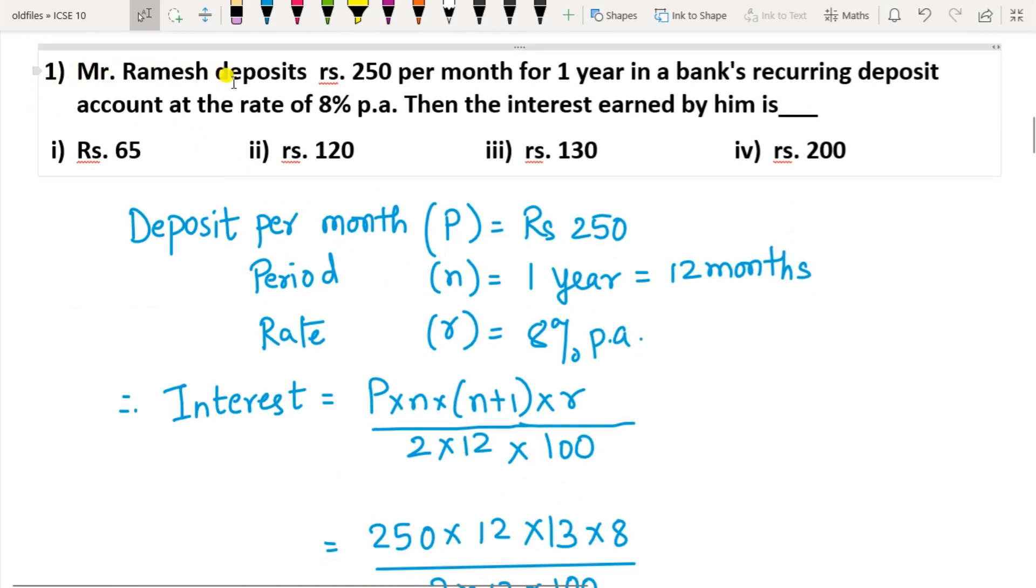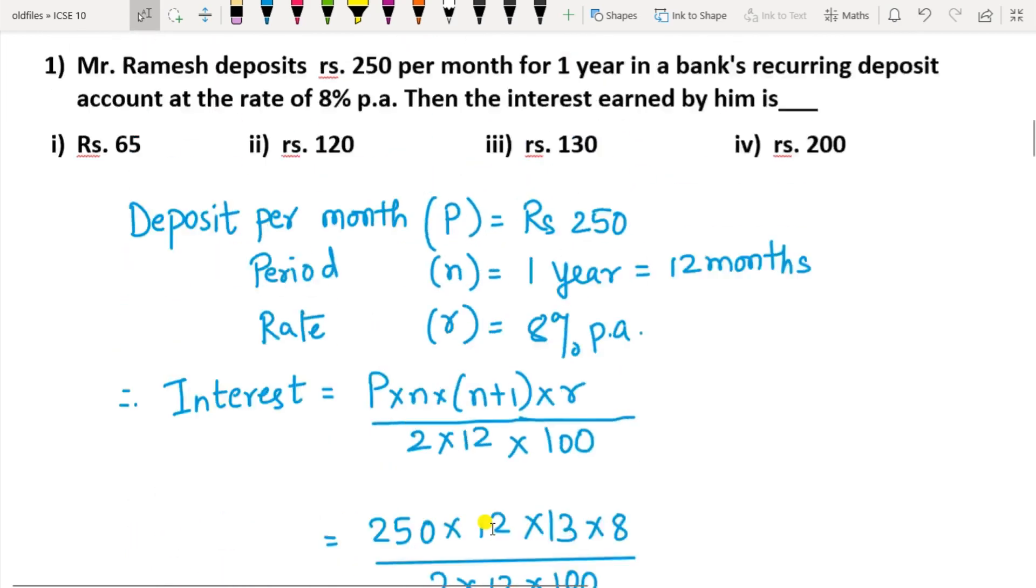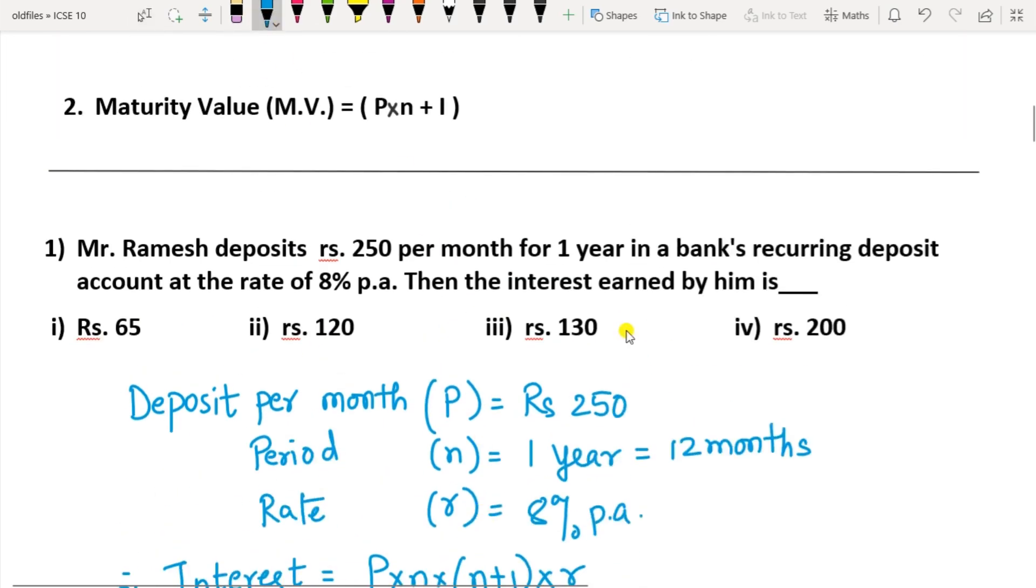Now, let us start with the MCQs. First one: Mr. Ramesh deposits Rs. 250 per month for one year in a bank's recurring deposit account at the rate of 8% per annum. Then the interest earned by him is - you have to find the interest here. So, deposit per month P is 250, period n is 1 year equal to 12 months, rate r is 8%. Write the formula of the interest and substitute all the values, and you get the interest as 130. So in this case, option 3 is the correct option.